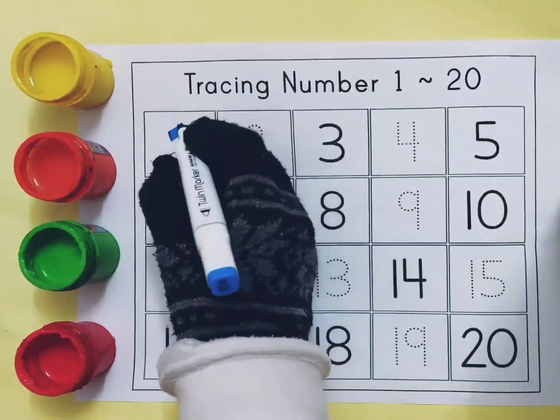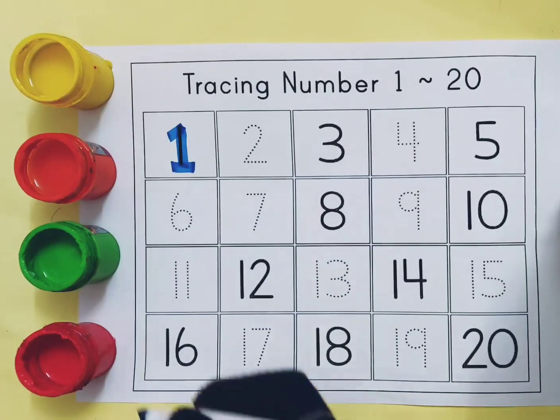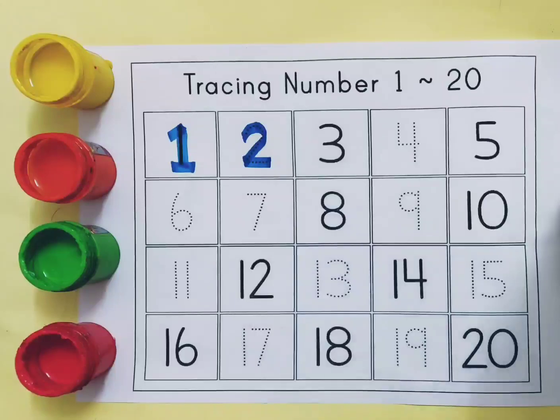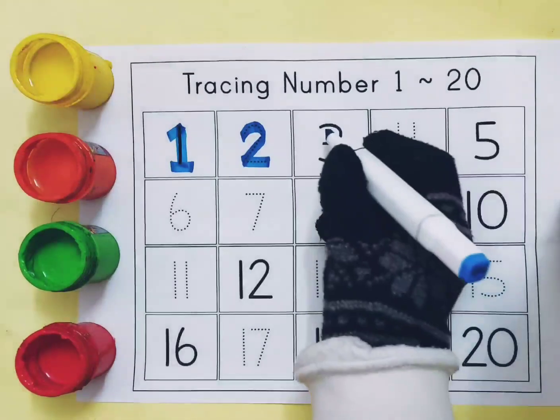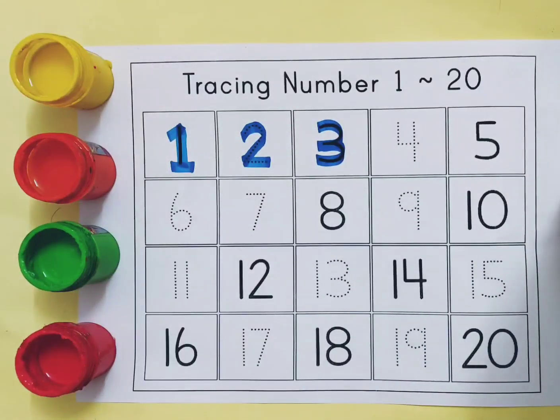This is 1, O-N-E, 1. This is 2, T-W-O, 2. This is 3, T-H-R-E-E, 3.